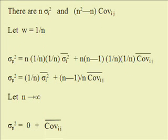we note that there are n variances, and n squared minus n, or if you like, n minus 1 times n covariances, and we let the weights equal 1/n of the total portfolio, we find that the variance disappears as n gets large.